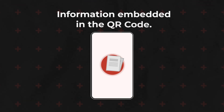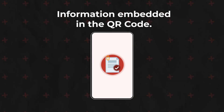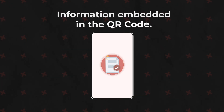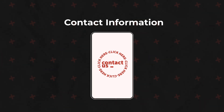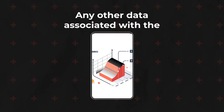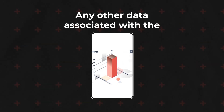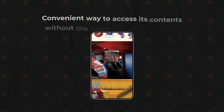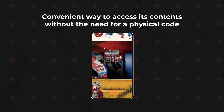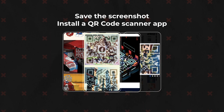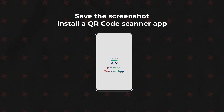The app will now display the information embedded in the QR code — this could be a website link, contact information, text, or any other data associated with the code. Scanning a QR code from a screenshot is a convenient way to access its contents without the need for a physical code.